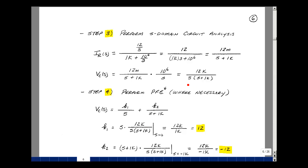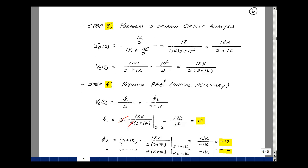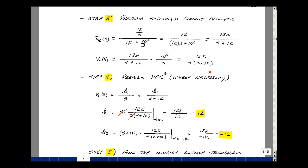To find the value of K1, we'll then multiply our capacitor voltage by S, and then let S equal 0. We get a term cancellation, and then you get 12k over 1k, or 12. To find K2, we'll multiply this expression by S plus 1k, and then let S equal minus 1k. So this cancels with this, and we have 12k over minus 1k, and that's minus 12.